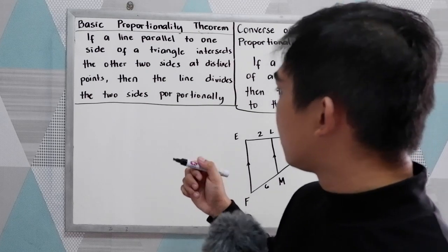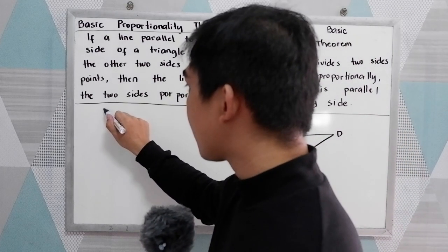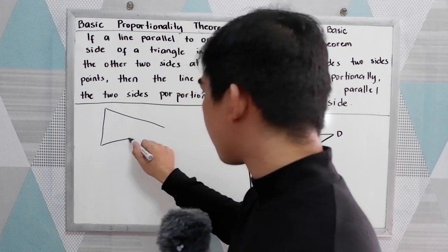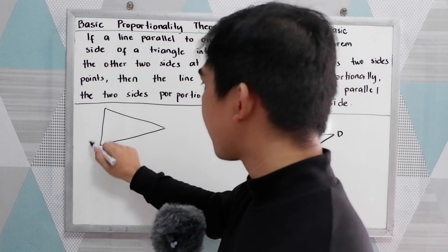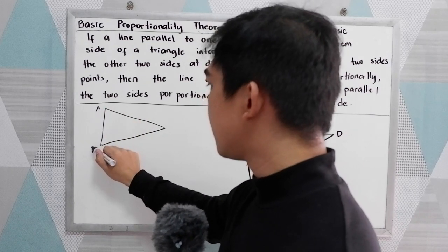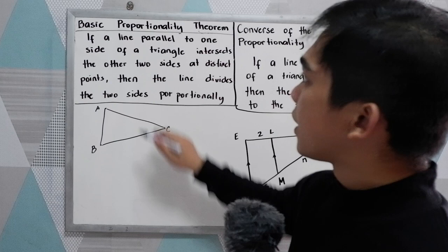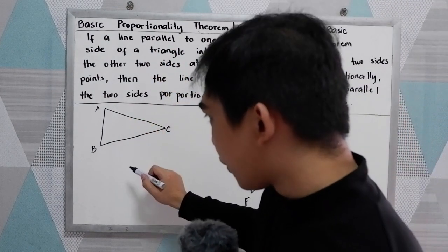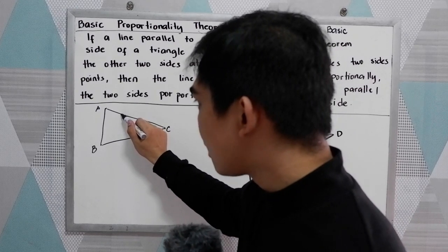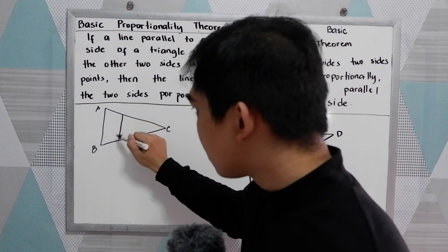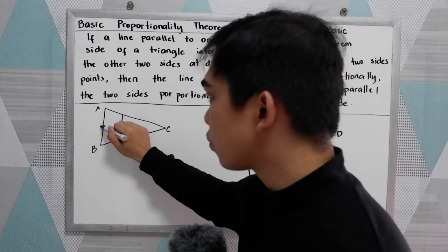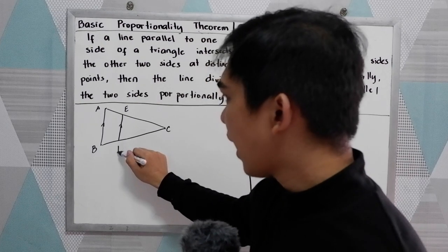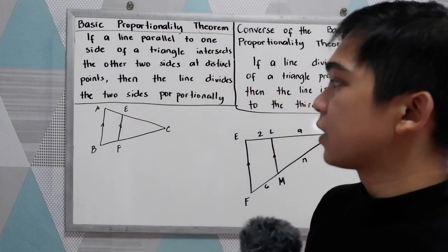Now let's have our triangle to illustrate our theorem. So we have triangle A, B, C. If a line parallel to one side of a triangle — we're going to draw a line parallel to one side. Let's say AB is parallel to EF.